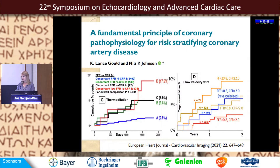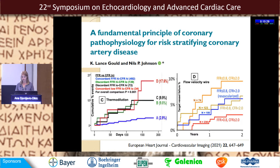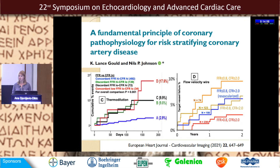According to the latest editorial in the European Heart Journal by Lance Gould and Niles Johnson, we should take into account both methods — relative coronary flow reserve and fractional flow reserve. These graphs show that the best cumulative outcomes belong to patients with normal FFR and normal coronary flow reserve, while low FFR and low coronary flow reserve is associated with more events. There is also discrepancy between these two measures.